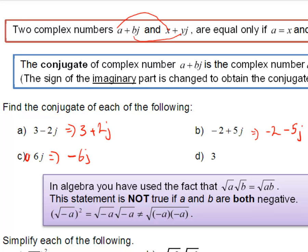The conjugate of 6j is minus 6j. And the way to think about that, this would have been 0 plus 6j. Now it's 0 minus 6j. So again, only the imaginary part is changing.